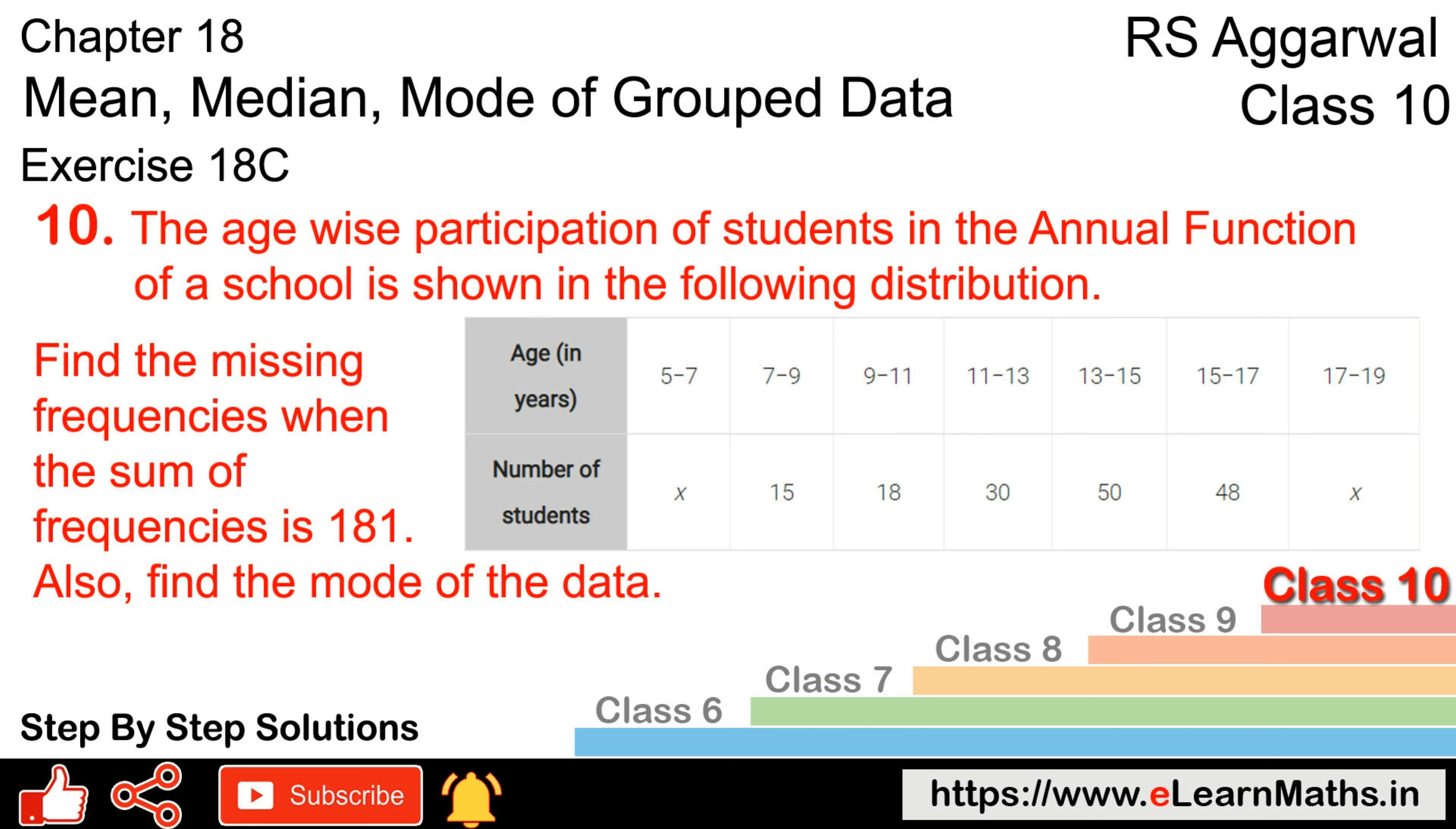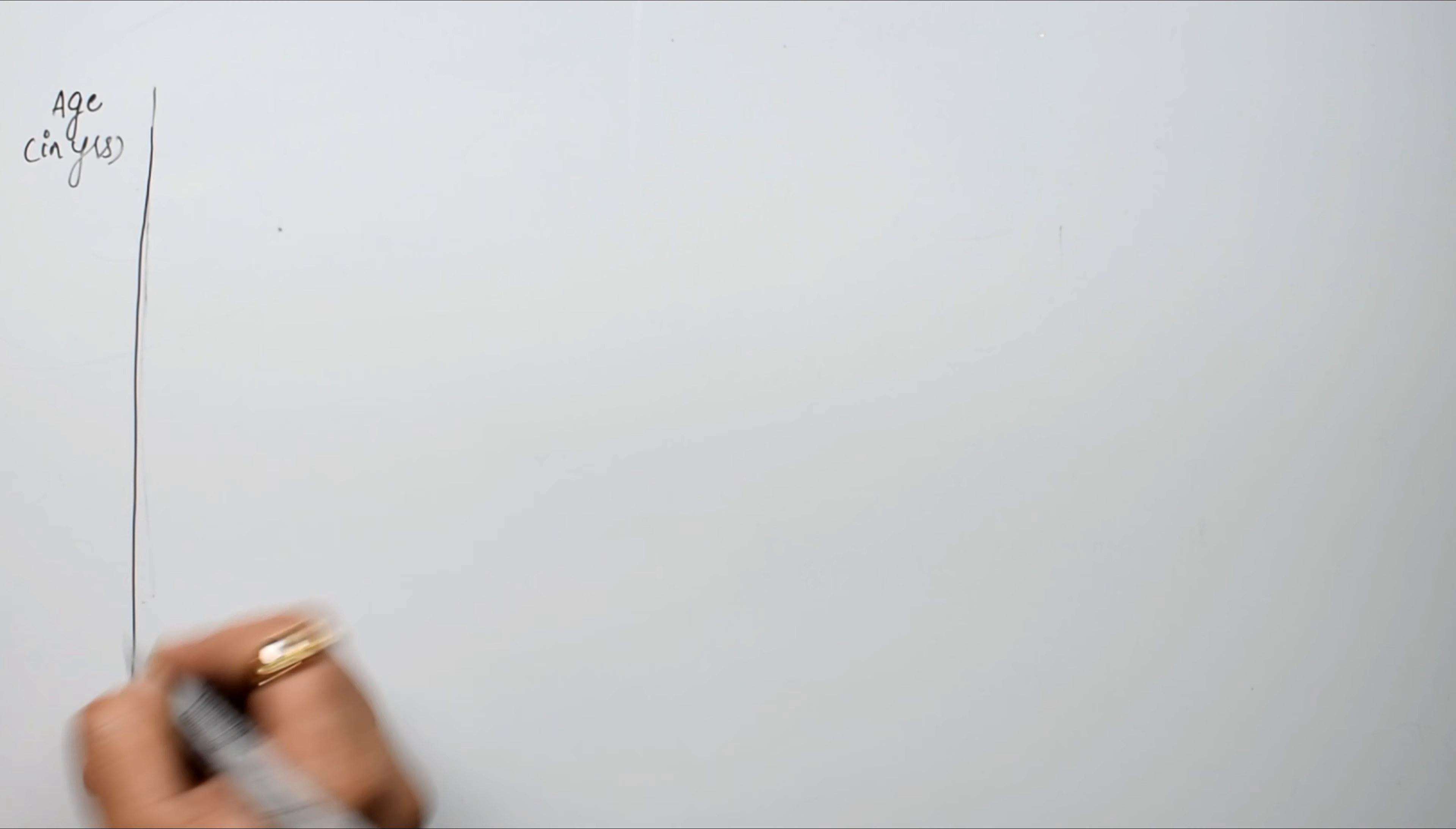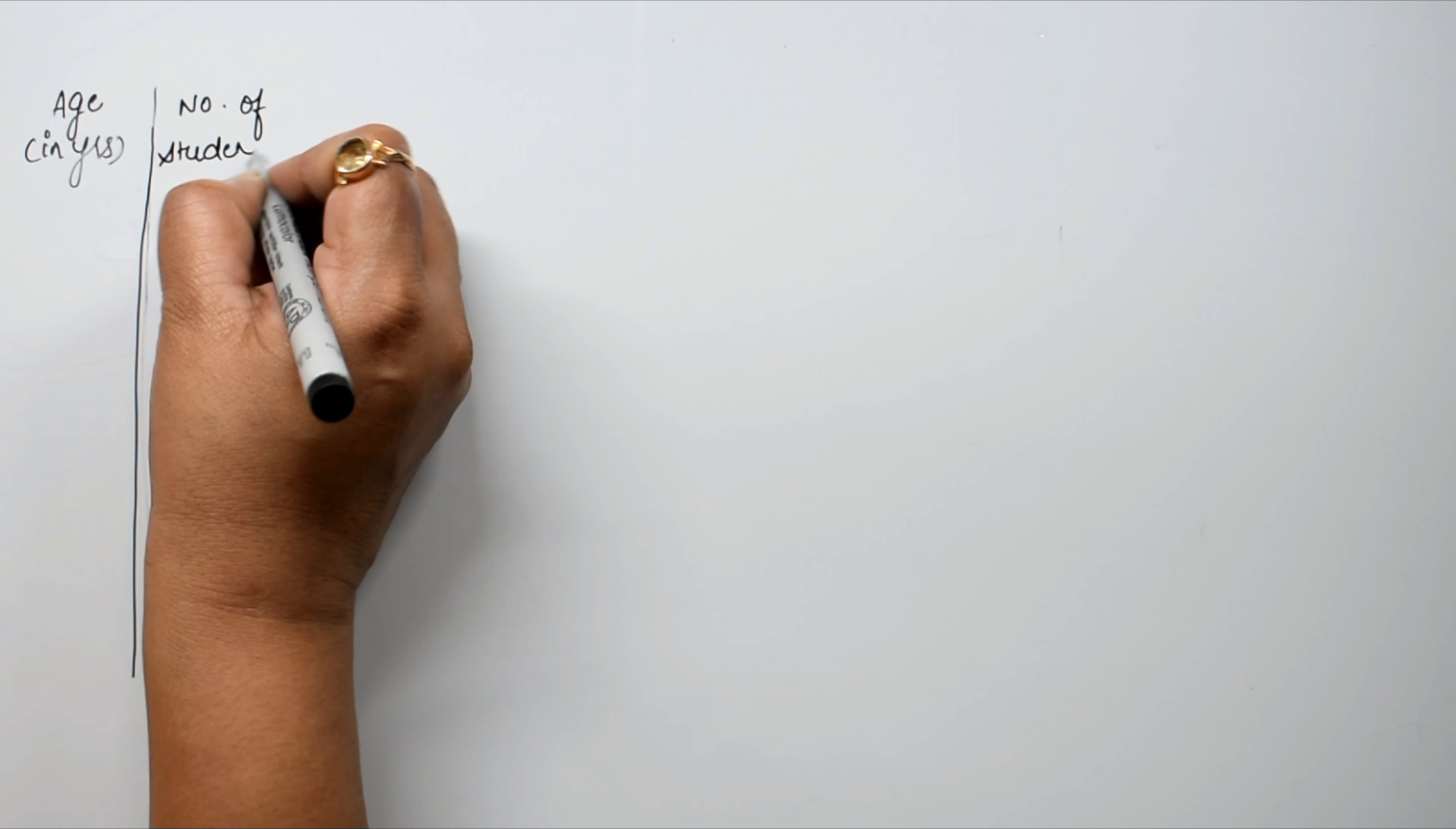Let's do question number 10 of Exercise 18C, that is mean, median, and mode of grouped data. Question number 10 is the age-wise participation of students in annual function of a school is shown in the following distribution. We see students participation in annual function age-wise. We have given age in years and we have given number of students.